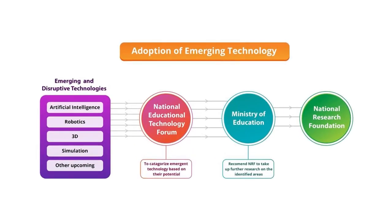The adoption of emerging technologies like artificial intelligence, robotics, 3D simulations, and other computing is key. The educational policy has talked about three important things. One is the National Educational Technology Forum — to categorize emergent technologies based on their potential. They will meet with the Ministry of Education, recommend NARFs to take up further research on identified areas, and feed inputs to the National Research Foundation.